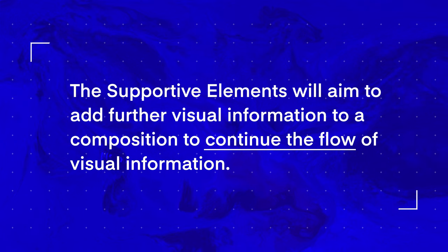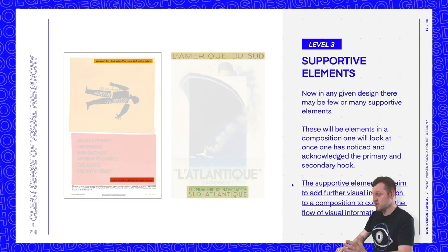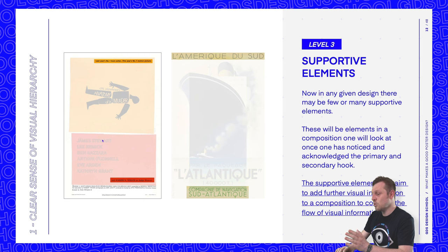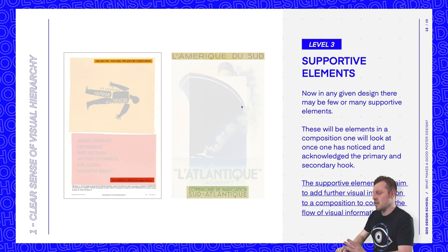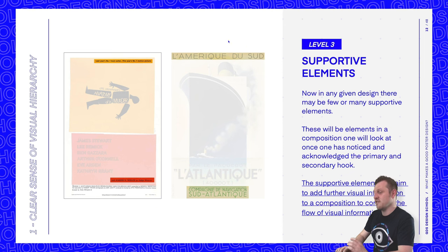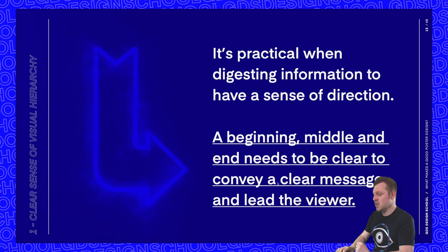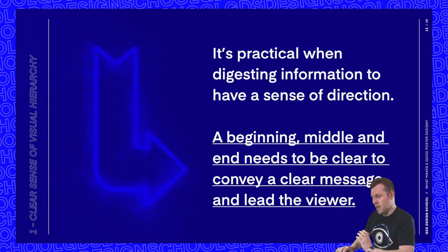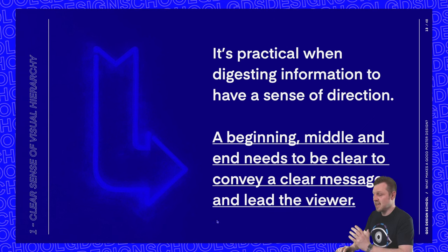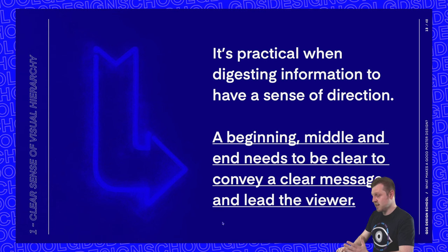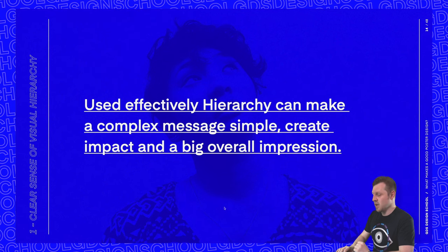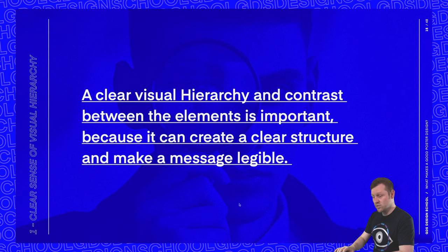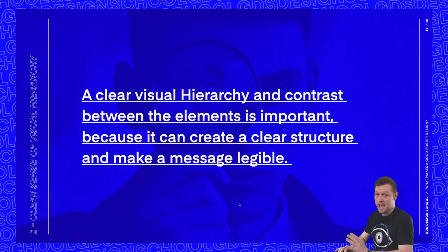Supportive elements are those in a composition one will look at once one has noticed and acknowledged the primary and secondary hook. They aim to add further visual information and continue the flow. In both examples, the supportive elements are the smaller subtitle at the top and the footer elements at the base. It's practical when digesting information to have a sense of direction — a beginning, middle, and end — to convey a clear message. Used effectively, hierarchy can make a complex message simple, create impact, and make a message legible.